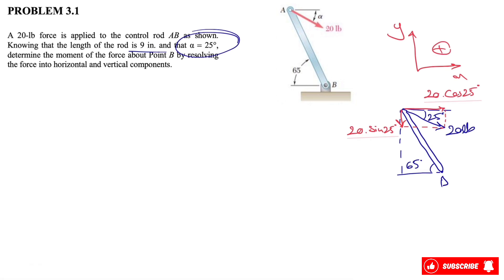I'm going to show the length of this with green. We know the length of the rod is 9 inches, which means this side, which is the opposite to 65 degrees, will be 9 times sine of 65 degrees, and this will be 9 times cosine of 65 degrees. Now that we have everything, we're good to go.